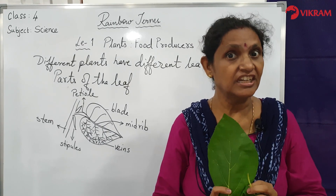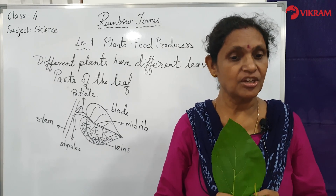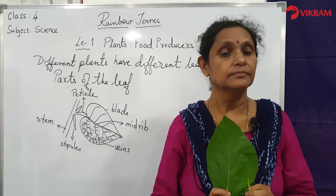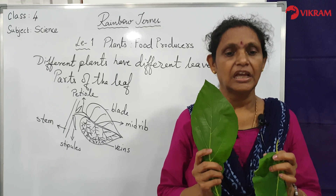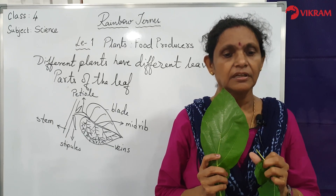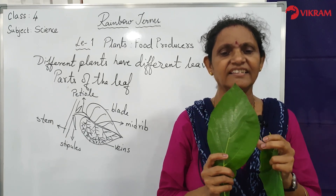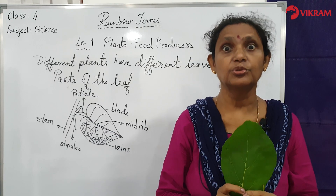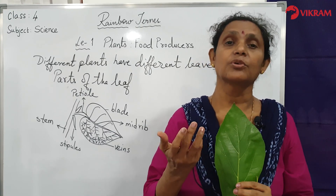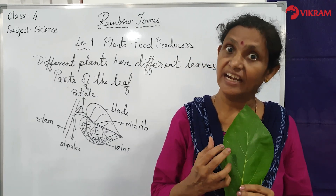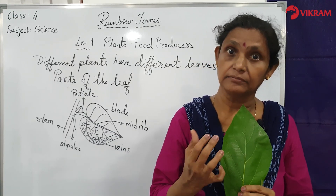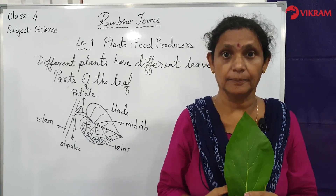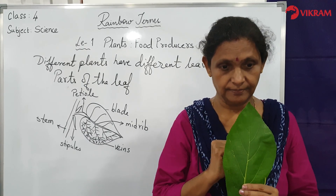I am sure you have eaten mint, cabbage, and spinach. Some leaves store food and can be eaten raw, such as coriander. So the food is stored in the leaves.